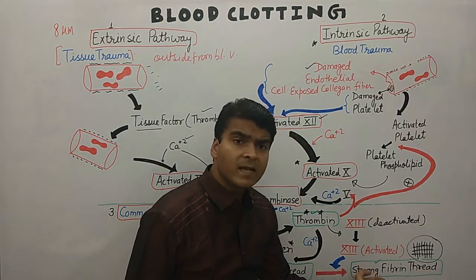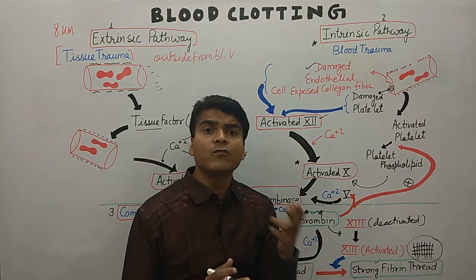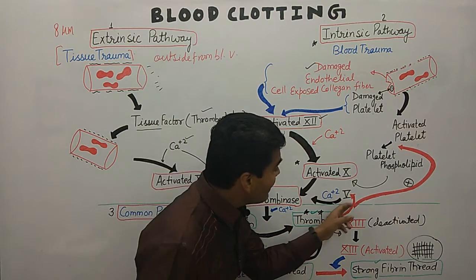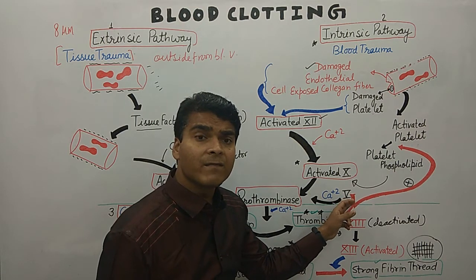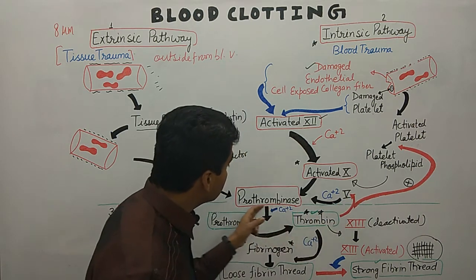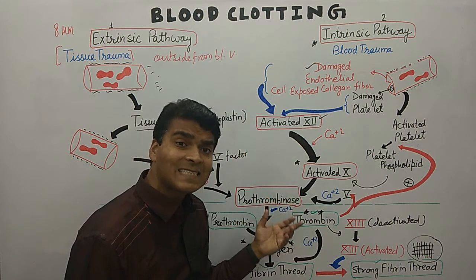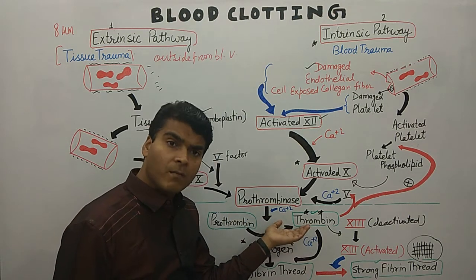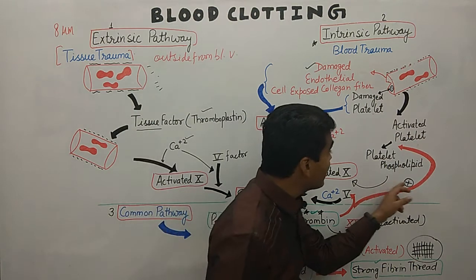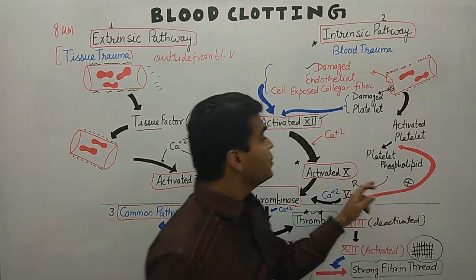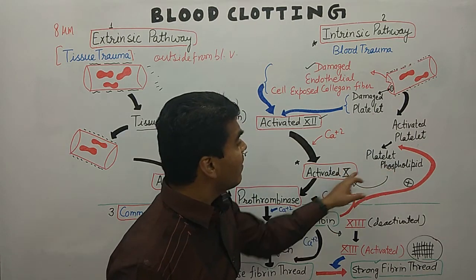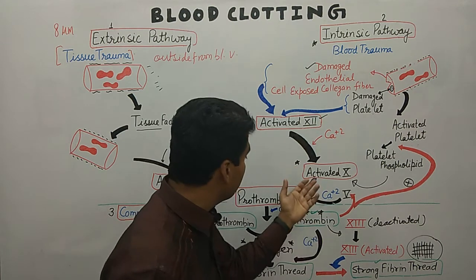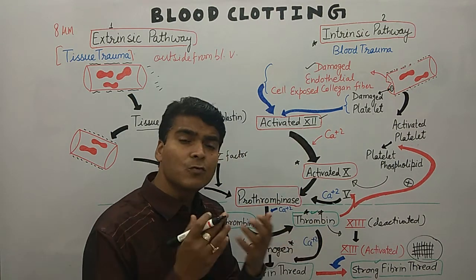Here we form the strong fibrin thread. Now thrombin has two feedback mechanisms. First, it activates factor number 5, which leads to formation of more prothrombinase — thereby accelerating the formation of prothrombinase and again generating more thrombin. Second, thrombin also activates the formation of platelet phospholipids, which activate factor number 10, and activated factor 10 is ultimately involved in the formation of prothrombinase. So thrombin has two feedback mechanisms.